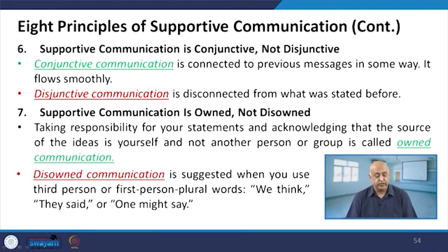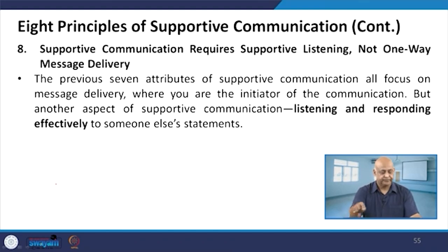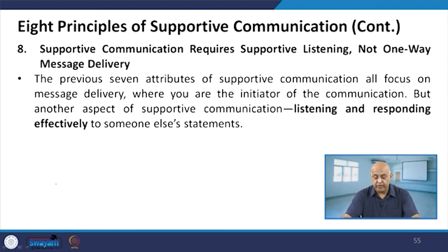Fifth principle: supportive communication is conjunctive, not disjunctive — it is connected to the previous message in some way, flows smoothly, and is not disconnected from what was stated before. Sixth principle: supportive communication is owned and not disowned — take responsibility for the statements you have given. Own the idea yourself and not another person or group. Many times it happens that leaders, whenever there is success, take the ownership, but when there is failure, they leave it to others — that is to be avoided. Use first-person words. Seventh principle: supportive communication requires supportive listening, not one-way message delivery. Focus on message delivery, but also the aspect of listening and responding effectively to someone else's statements.